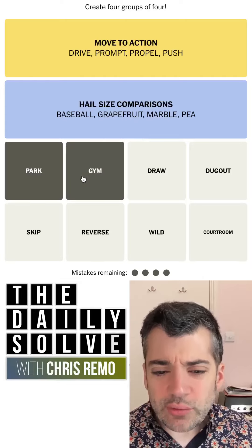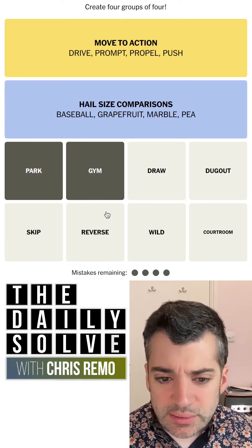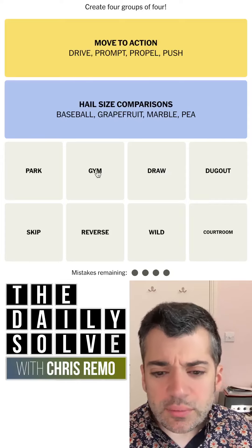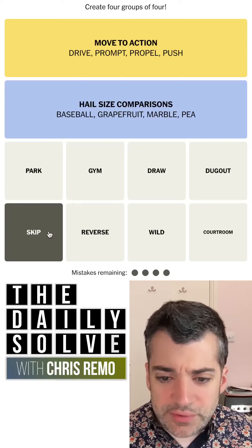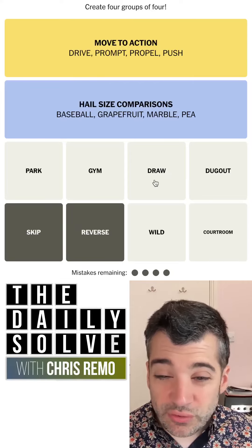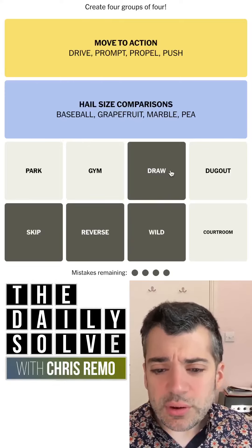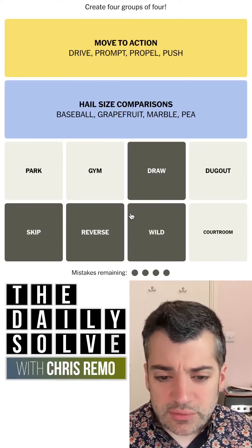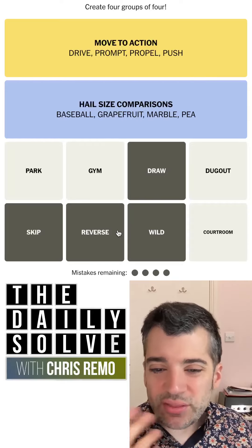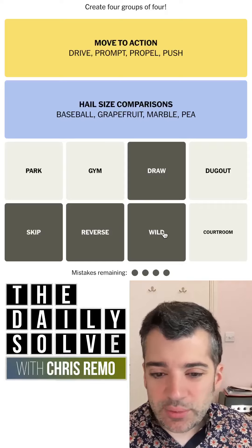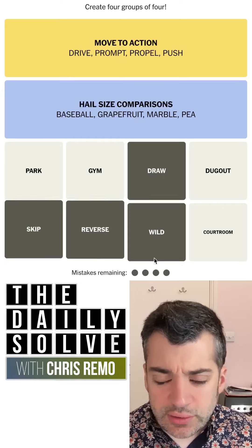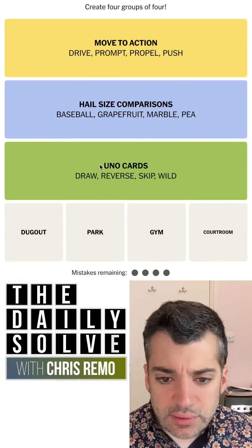Park, gym — these are sort of recreational spaces maybe. Now I don't see anything else that looks like that. Oh, I see something funny. I can't believe I have this in my head given I've not played this in literal decades probably, but skip, reverse, draw, wild — I think these are all UNO cards. Skip a player, reverse the order of play, draw a card. I don't know really what wild does, but wild is a very common concept in card games. I sort of suspect that's one. UNO cards — that was right.